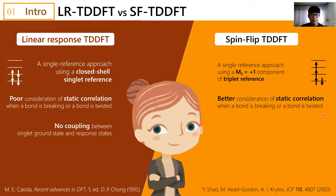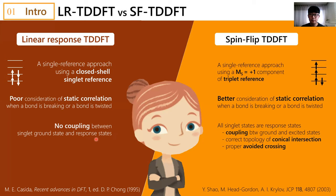Besides, in linear response TDDFT, there is no coupling between singlet ground state and its response states, while the singlet ground state of spin-flip TDDFT is described by one of the response states. Therefore, there is a proper coupling between ground and excited states, which leads to correct description of topology of conical intersection and correct description of avoided crossing between ground and excited states.